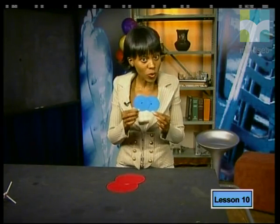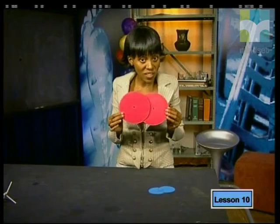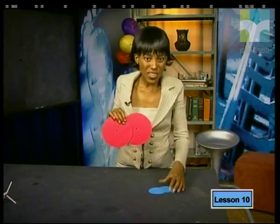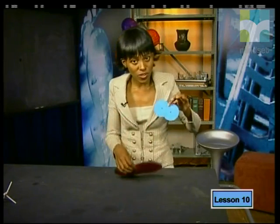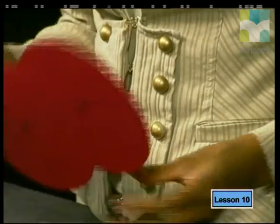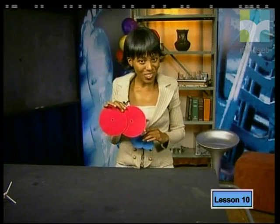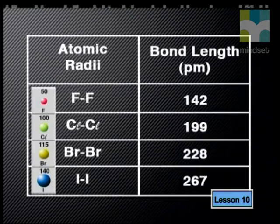I have used these cardboard circles to represent atoms of different sizes. You can have two small circles overlapping for a small molecule like fluorine, and two larger circles overlapping to represent a larger molecule like iodine. Notice that the distance between the centers of the smaller circles is much less than the distance between the centers of the larger circles. This model predicts that the larger the atomic radius of an atom, the larger the bond length of the molecule. Checking the bond lengths measured by x-rays confirms this: the larger the atom, the longer the bond.